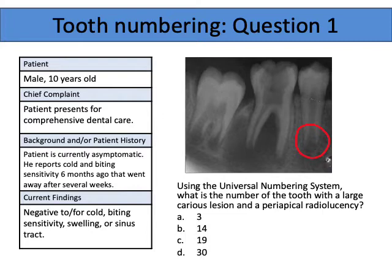Teeth erupt after about half the root is formed, and it's really this root development that drives tooth eruption. Once a root is completely formed, a tooth no longer has eruptive forces. A third molar that's completely developed and in the bone doesn't move once the root is formed all the way. So it's a little bit of a misnomer that third molars continue to move — they don't after the root is formed.